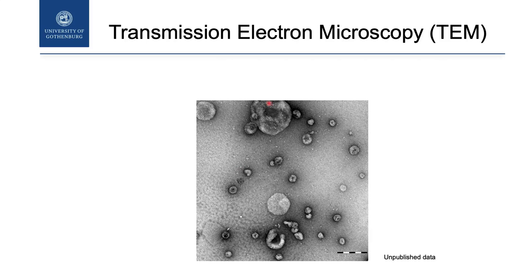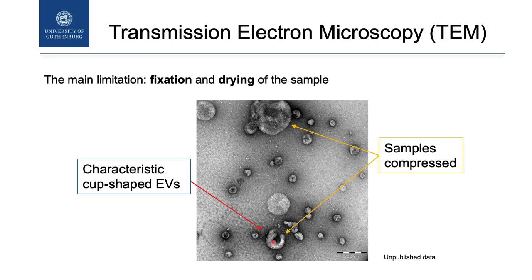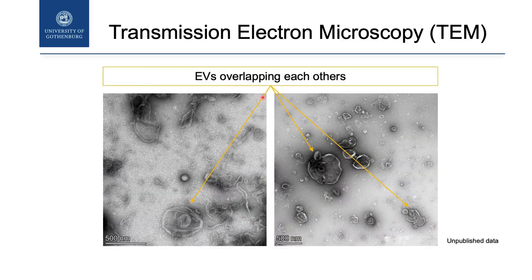Here is another picture of extracellular vesicles, probably much better — this is publishable in my opinion. We notice that these two vesicles have the typical cup shape of extracellular vesicles. This is normal with this technique because we have fixation and desiccation of the samples, so the vesicles — mostly the big ones — collapse. This makes a problem when you want to calculate the size. Another problem is that the vesicles overlap with each other — here you can distinguish vesicles inside a bigger vesicle. So the question is: if I want to calculate the size of these vesicles, how can I do it?